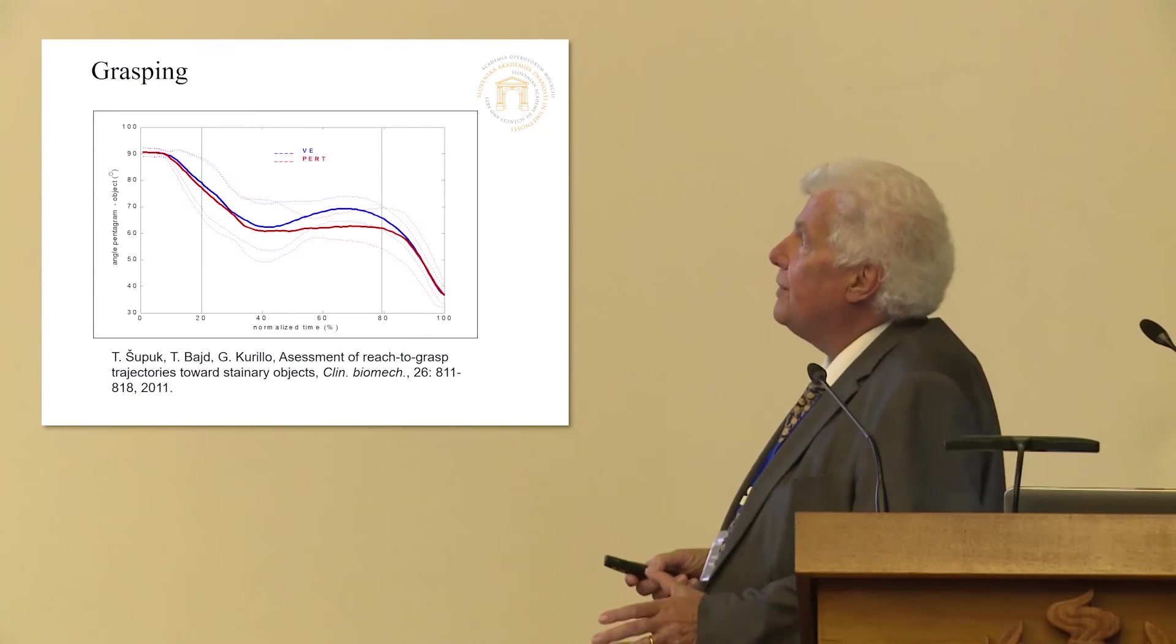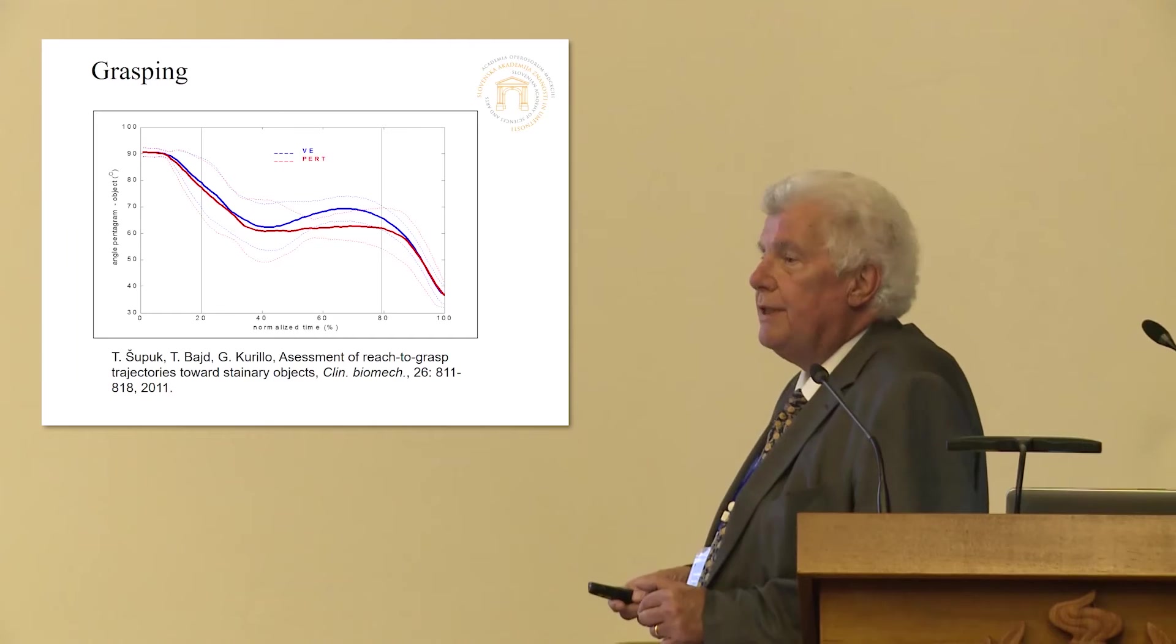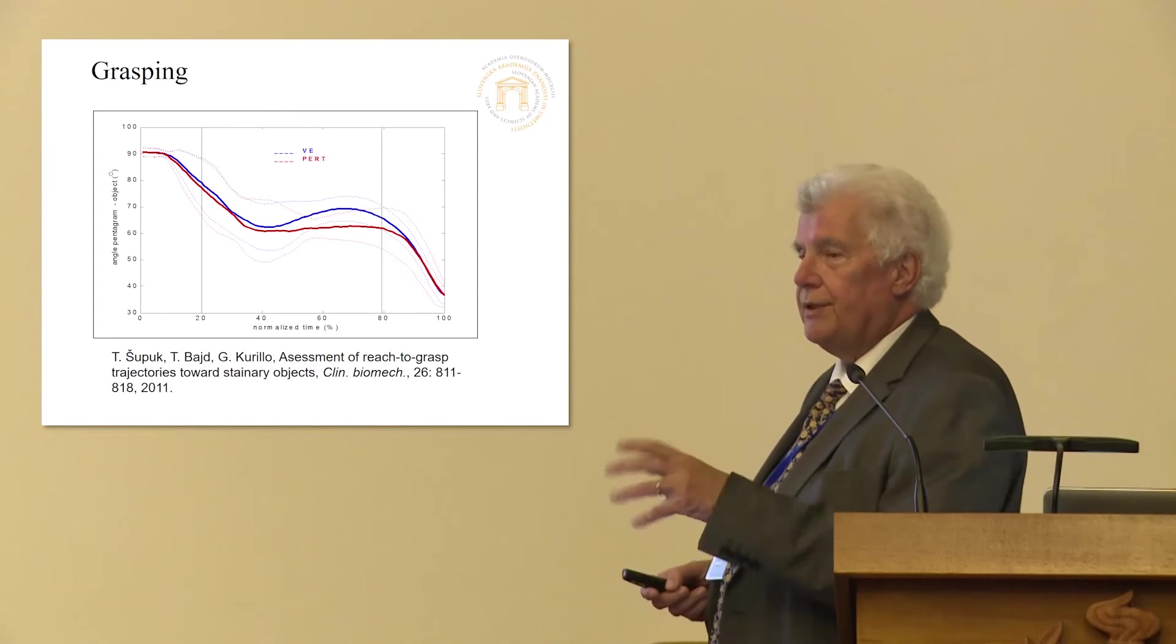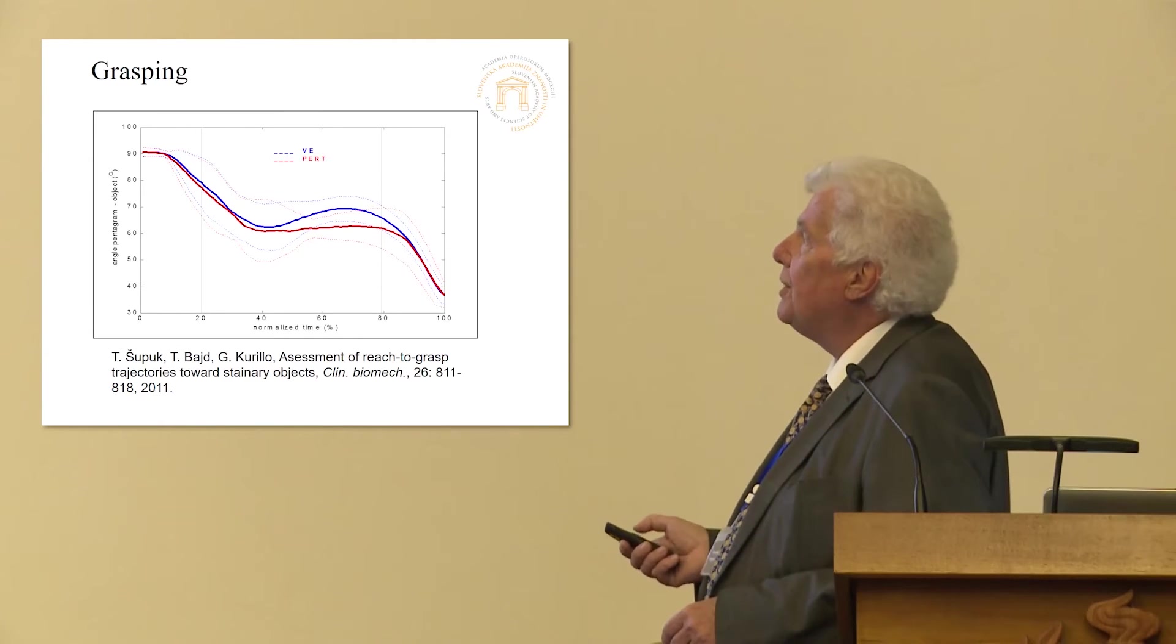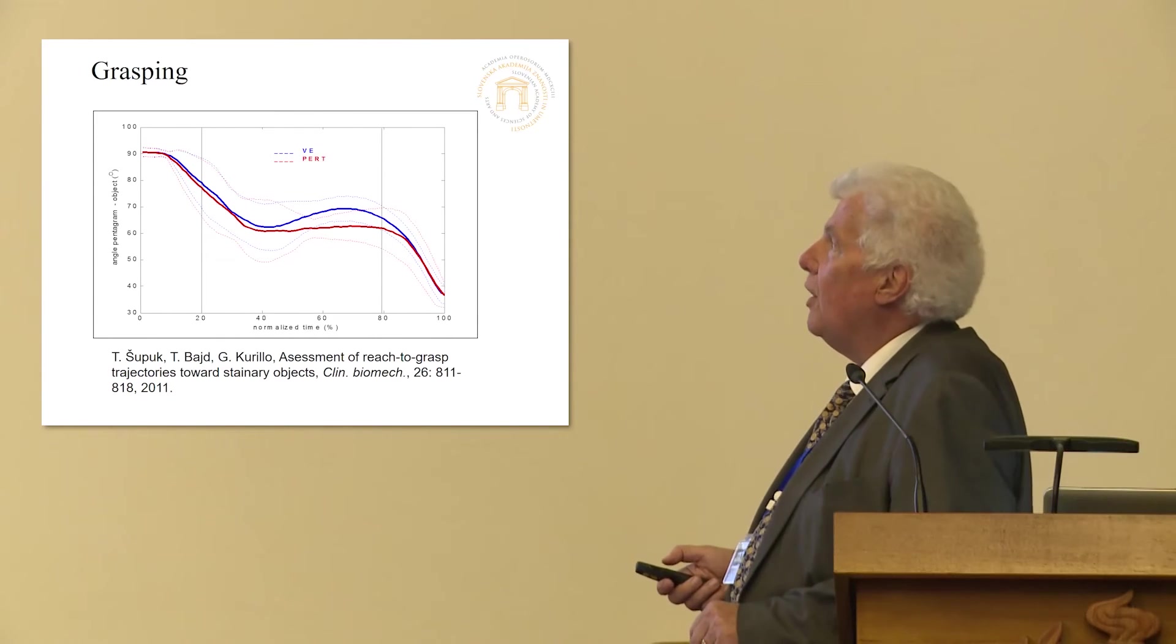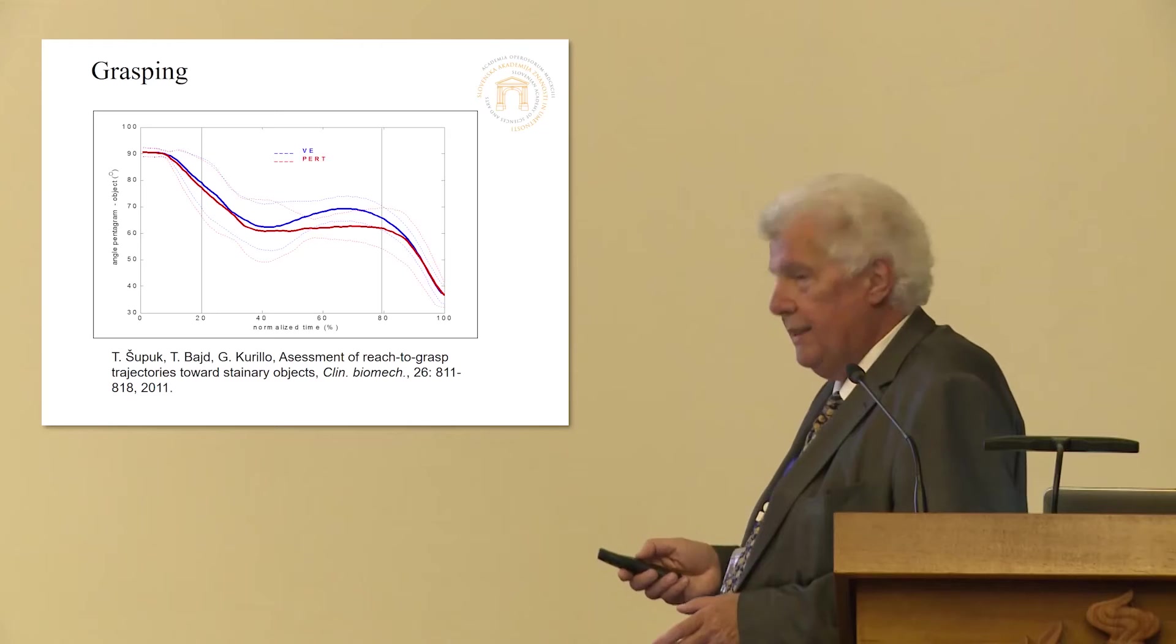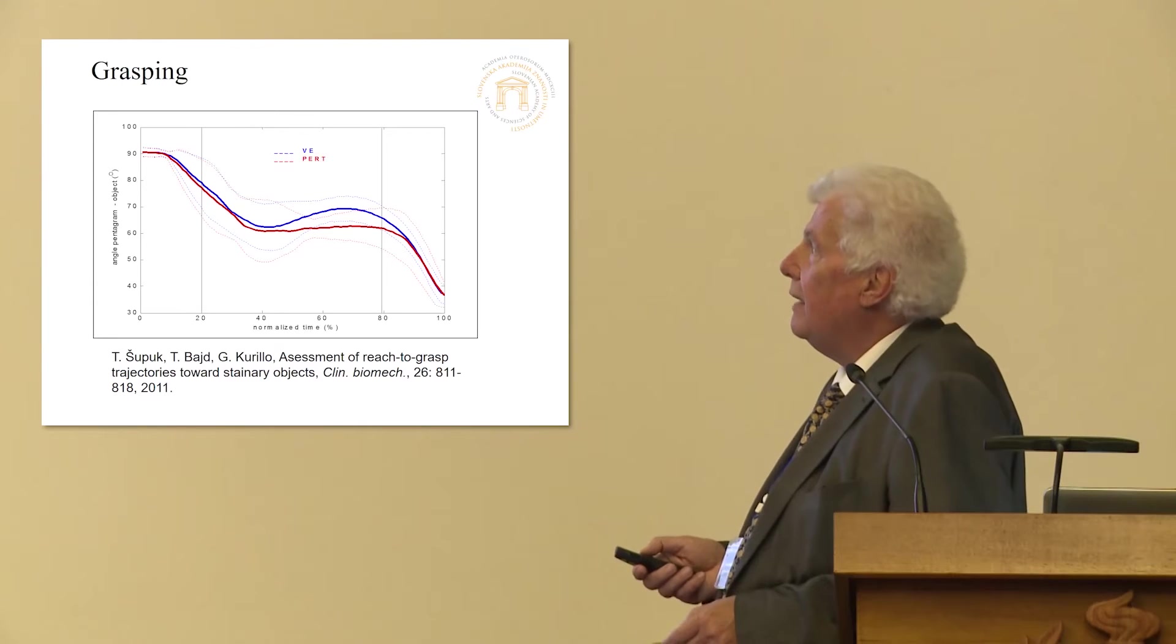In addition, we also defined another parameter important for this approaching phase, which is the angle between the normal to the object and normal to this Pentagon. And you can see that first there is a sharp rotation of this angle, which means rotation of the wrist. Then we have a kind of transport phase, where the angle is not changing much. And then again, a rapid rotation at the end, which means pre-shaping of the fingers close to the object. And again, similar to what Professor Tomovic was saying, there is not much difference between different people, and also not much difference between different objects, and not much difference when some perturbation occurs in the movement.